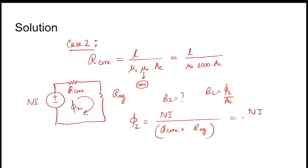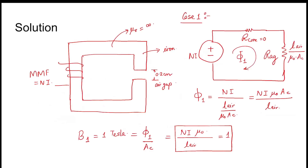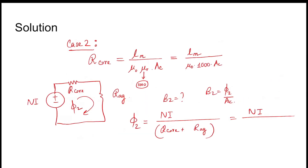Now, what is L for R_core? L is L_m, the magnetic path length inside the core. Inside the core means 40 minus 0.2, because 0.2 cm is the air gap, so the traversal in the core is 39.8 centimeter. R_core equals 39.8 cm divided by (mu_0 times 1000 times A_c).